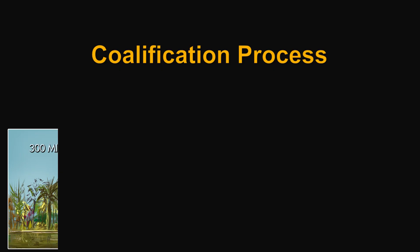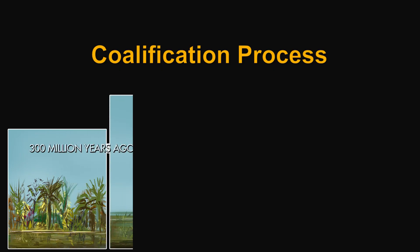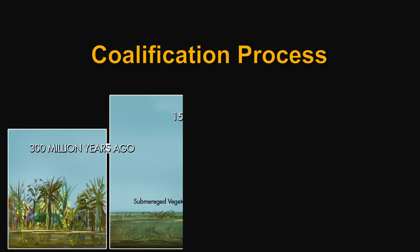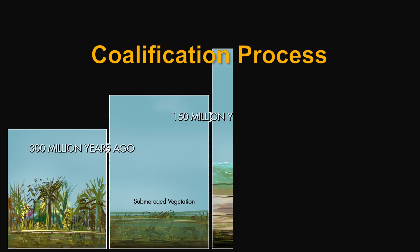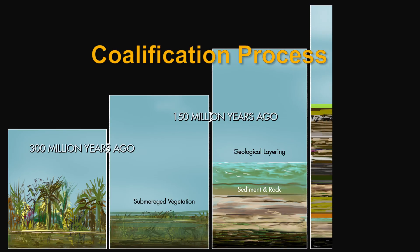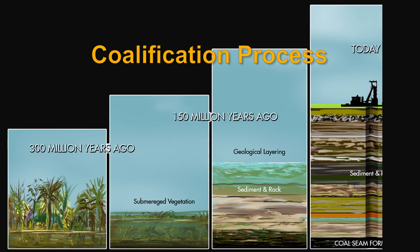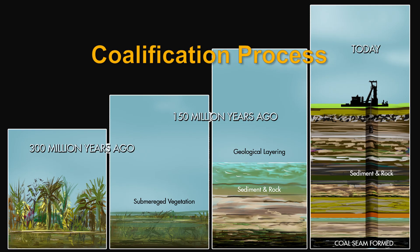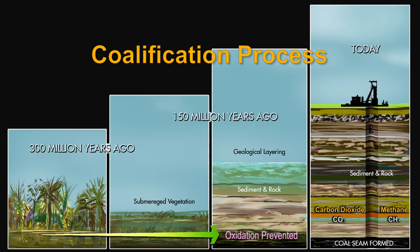Coal seams were formed from the decomposition and intensified compression of layers of rotten plant material over millions of years, which over time became buried by subsequent layers of non-carbonous material. This forms the geological strata that sits above the coal seam. As the layers became successively covered, oxidisation was prevented, thus halting the decomposition process. Carbon dioxide and methane gases were generated during the coalification process and contained within the pores of the coal.